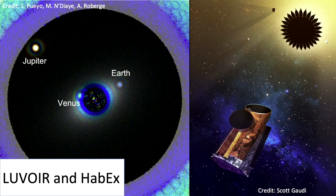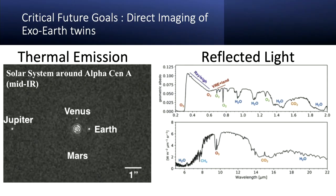This is a key long-term goal: to image systems like our own. Here is a prediction from ELT in the mid-infrared, and a prediction of what a habitable-zone exoplanet spectrum would look like with LUVOIR in the optical. This is the point where we start actually looking for biosignatures — you start seeing lots of molecular features. Then the question is: what is a robust biosignature? But I'm not going to dig into that in this talk.